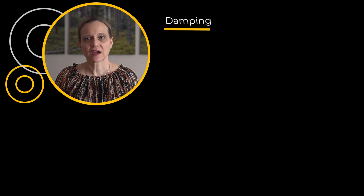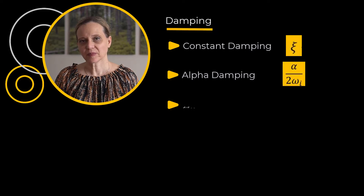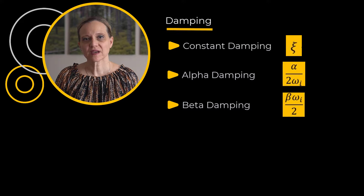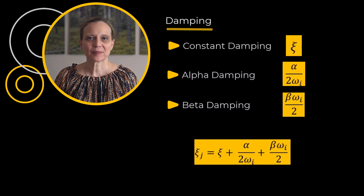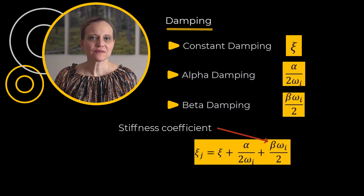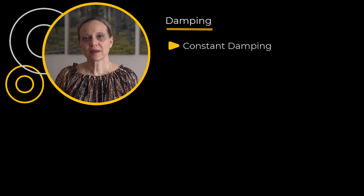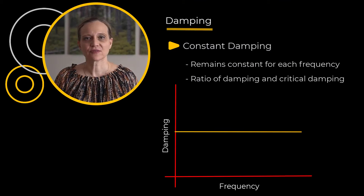Let us now investigate the damping term xi j. In general, there are three types of damping typically used in mode superposition-based analysis: constant damping, alpha damping, and beta damping. Damping can be defined using any or all of the above types. We can express damping as the sum of a constant damping ratio, alpha, and beta damping terms. Xi is the constant damping ratio. The second term represents alpha damping, where alpha is the mass coefficient. The third term represents beta damping, where beta is the stiffness coefficient. Alpha and beta damping together are called Rayleigh damping. The constant damping ratio is constant for each frequency — it is the ratio of damping to critical damping at a given frequency or mode.